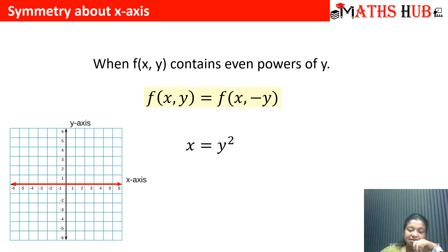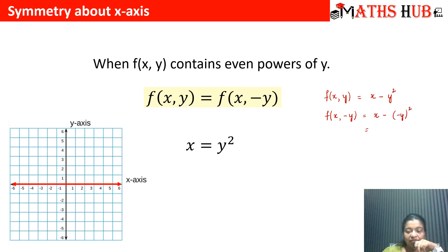For example, take the function x = y². Taking all terms to one side gives f(x, y) = x − y². To check symmetry about the x-axis, replace y with −y: we get x − (−y)² = x − y². The function f(x, y) and f(x, −y) are the same, and hence this graph is symmetrical about the x-axis.